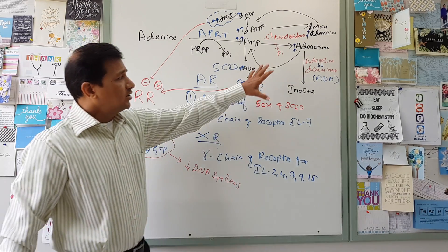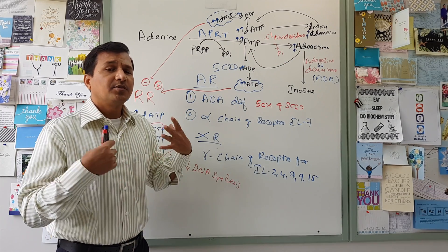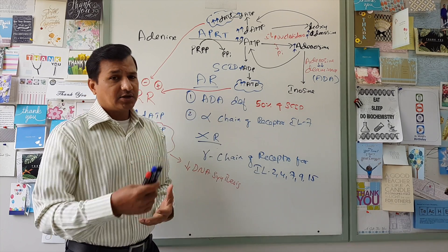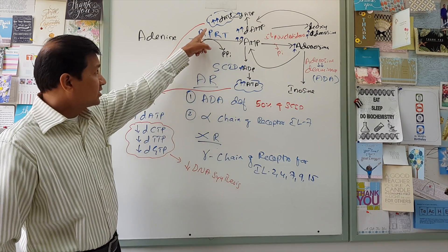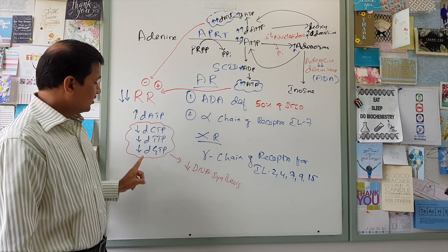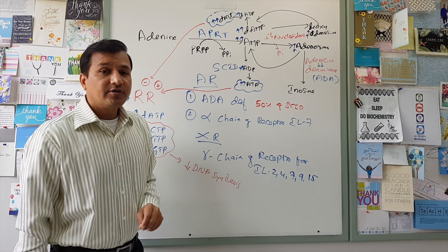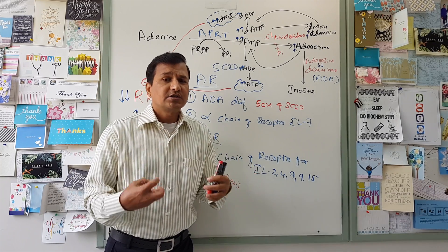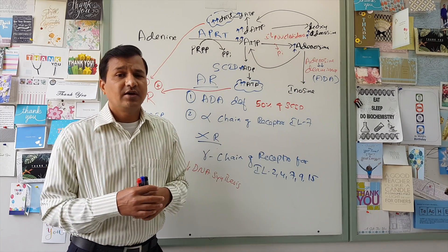It is important to note that adenosine deaminase is highly concentrated in lymphocytes. Lymphocytes are predominantly dependent on the purine salvage pathway and rely on adenosine deaminase to keep the pathway running. When there is a deficiency of ADA, dATP accumulates, inhibits ribonucleotide reductase, decreases other deoxynucleotide triphosphates, and reduces overall DNA synthesis, affecting lymphocyte proliferation.